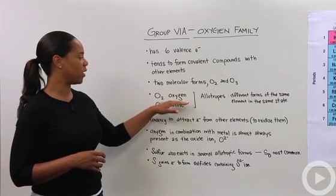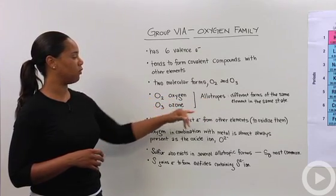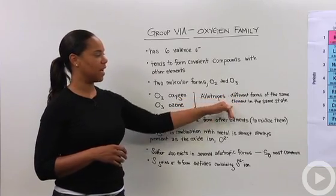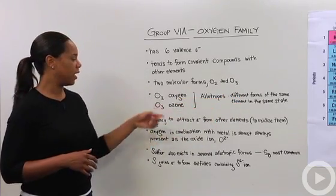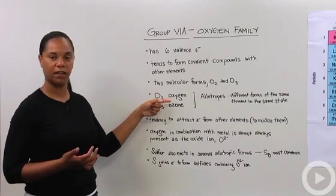So here's a good point too. We can say and remind ourselves that oxygen O2 and ozone O3 are allotropes, where they're different forms of the same element in the same state. And when I say state, I mean as in both of these are in the gaseous state.